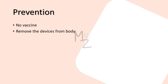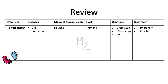Prevention: there is no vaccine; the only way to prevent infection is to remove the devices from the body. Recap: Acinetobacter is responsible for causing UTI and pneumonia — both ventilator-associated and catheter-associated. It is transmitted via devices, hosts are humans, and it is also found in soil and water.